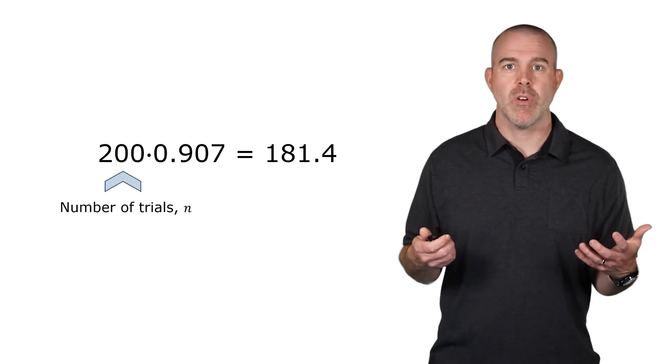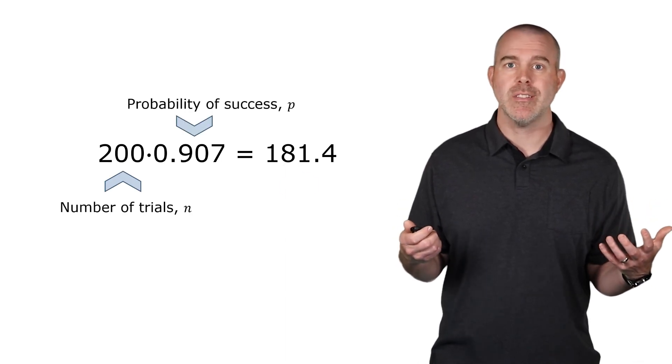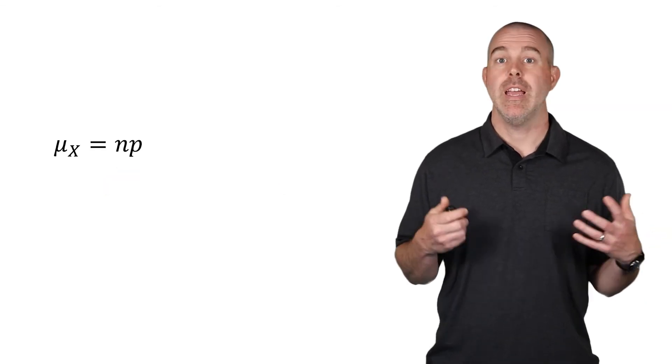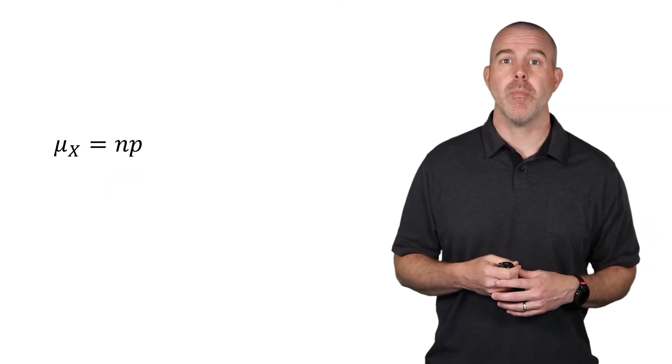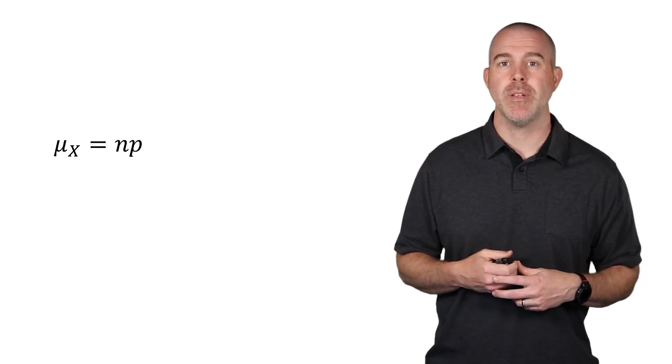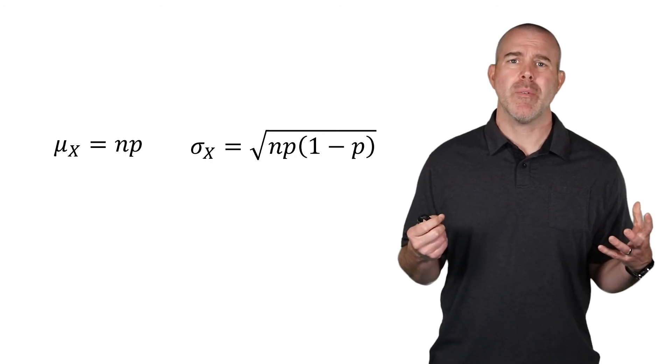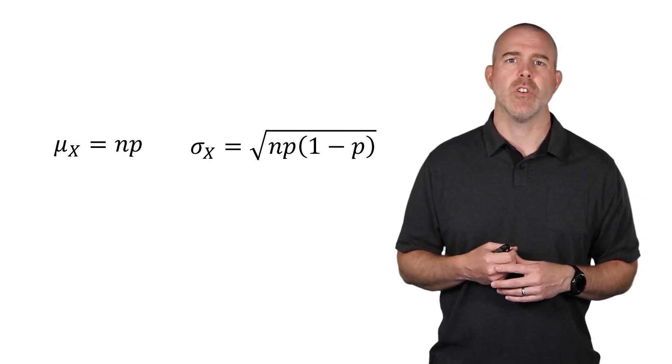In general, you just take the number of trials times the probability of success and that gets you your expected value. So, it's really what you would expect. In general, the mean of a binomial random variable is just the number of trials times the probability of success. And I have the standard deviation formula over here as well. Even though, like with regular random variables, we don't look at that as often.